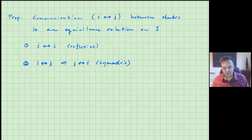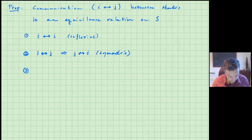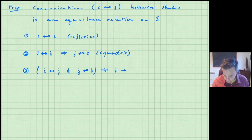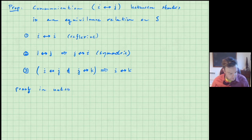The symmetric property is clearly true — that's just the nature of communication. These are the two very obvious parts of the proposition. The third part is maybe a little less obvious; it takes more work to prove — that's the transitive property. It says that if i and j communicate, and j and k communicate, then i and k communicate. For the proof of that, you might want to look at the notes — we won't do that proof here.